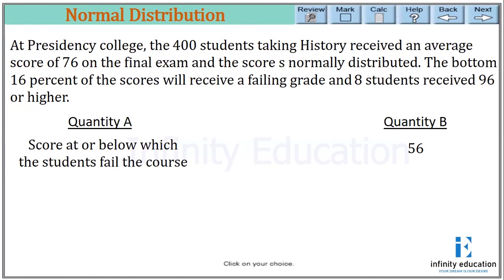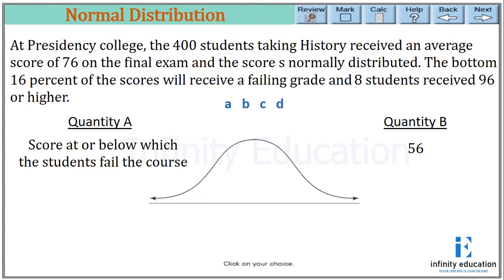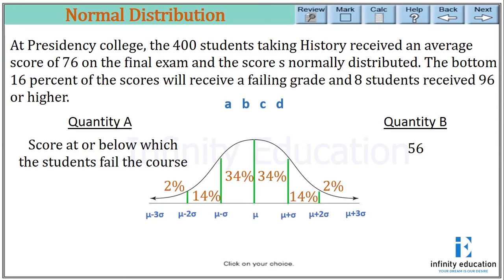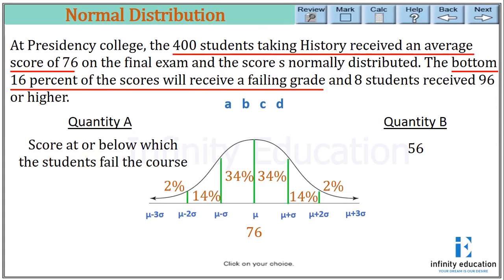Now let's do one more example. At Presidency College, 400 students taking history received an average score of 76 on the final exam and the scores are normally distributed. The bottom 16% of scores will receive a failing grade, and eight students received 96 or higher. This is a quant comp question, so we write A, B, C, D first, and draw the bell curve. The mean is 76, so we write 76 for mu.